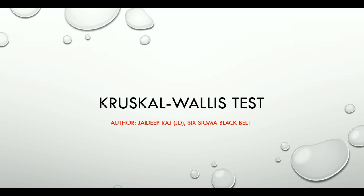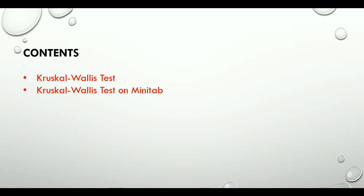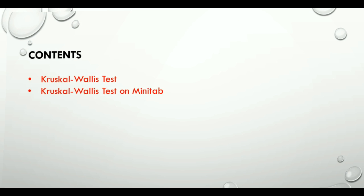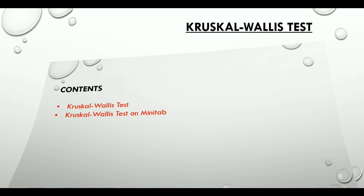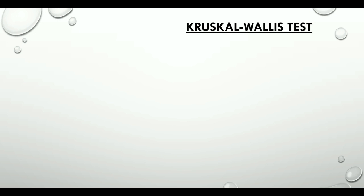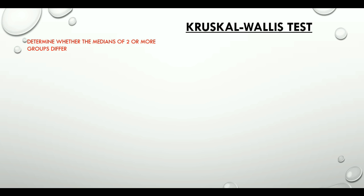Hello everyone, welcome to this video where we will talk about the Kruskal-Wallis test and how it is done on Minitab. The Kruskal-Wallis test helps us to determine whether the medians of two or more groups differ. It is a non-parametric alternative to one-way ANOVA and it permits the use of unequal sample sizes.